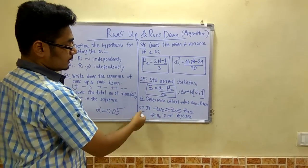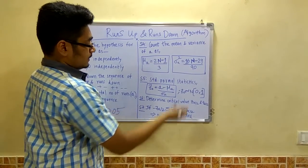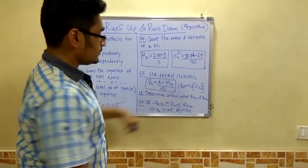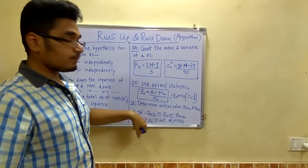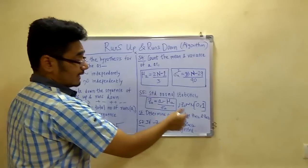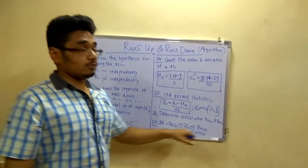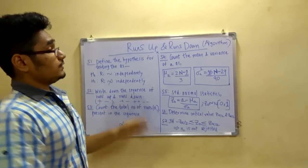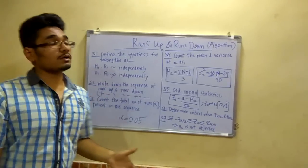After this you have to calculate the final step, that is you have to determine your Z0 is lying between these two ranges, that is the minus Z alpha by 2 and plus Z alpha by 2. If Z0 lies within this range, you will see that this hypothesis is not rejected and the numbers are independently distributed. So this is the runs up and runs down algorithm.